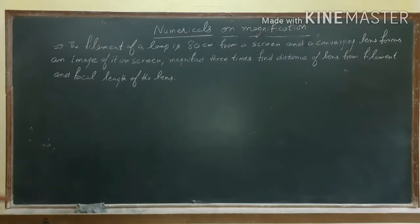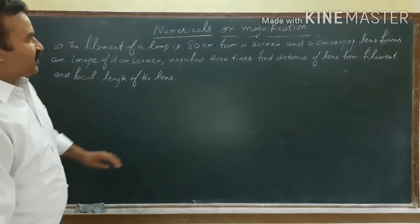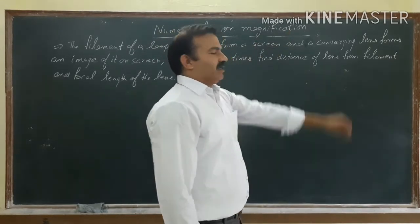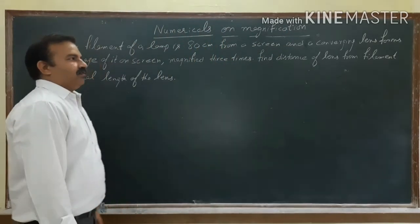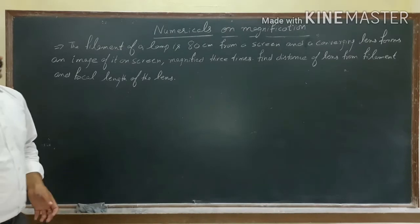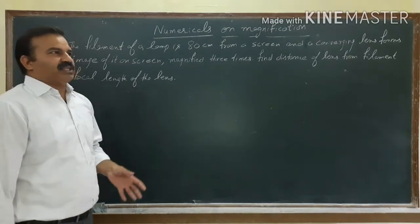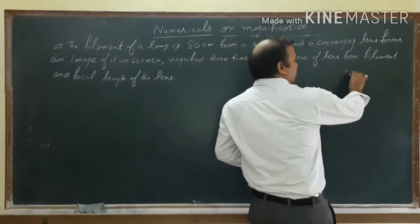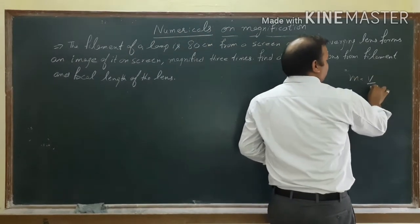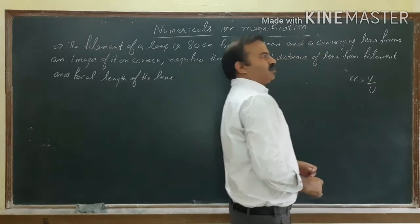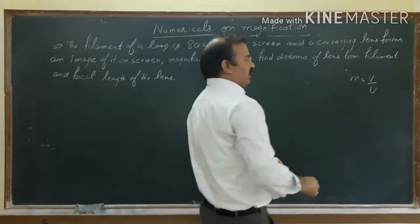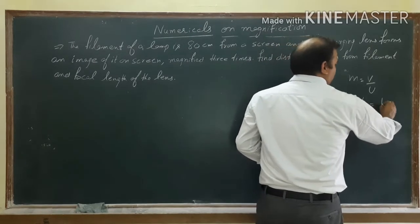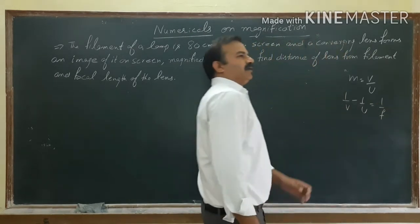Namaste students! In today's lecture, I am going to explain the numericals of magnification. In the last lecture, I taught you the formula for the magnification of a lens, that is M is equal to V by U, and also told you about the lens formula that is 1 by V minus 1 by U is equal to 1 by F.